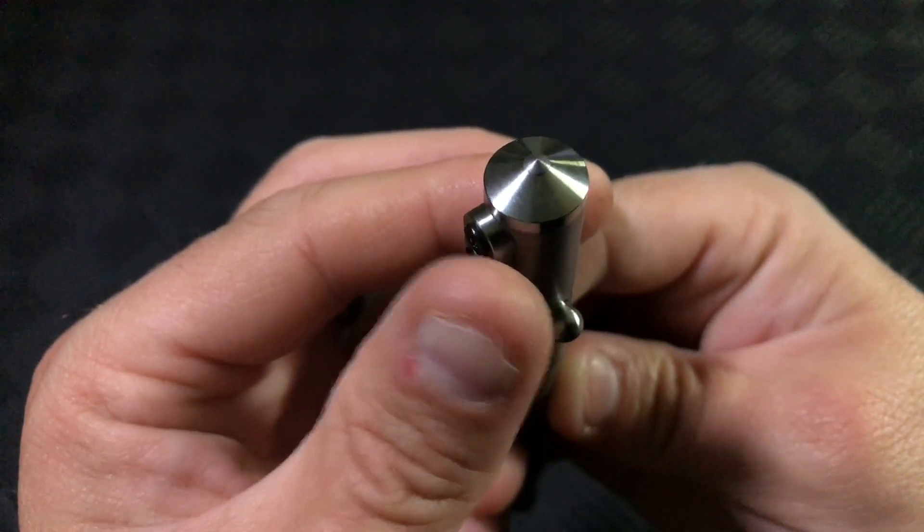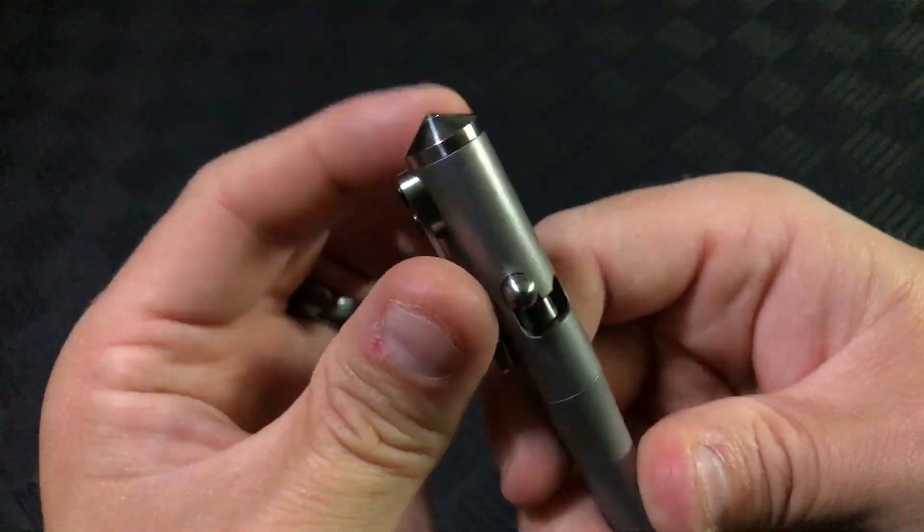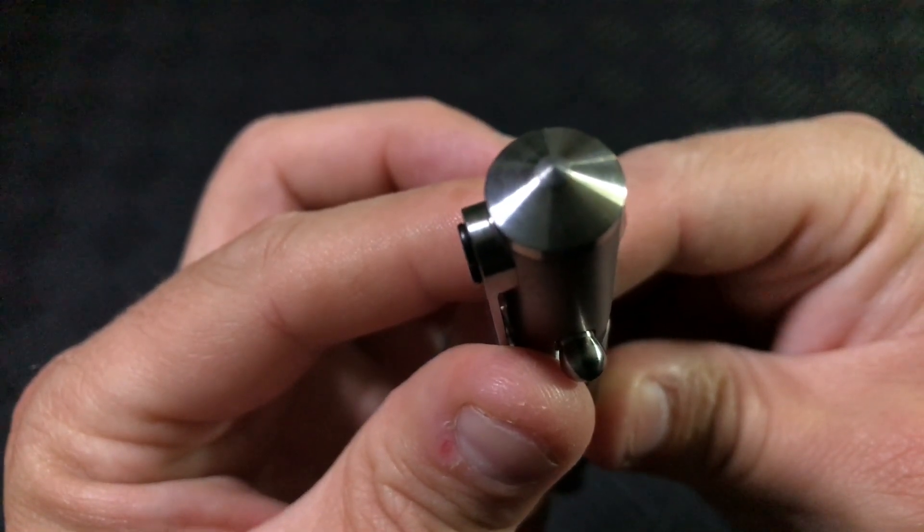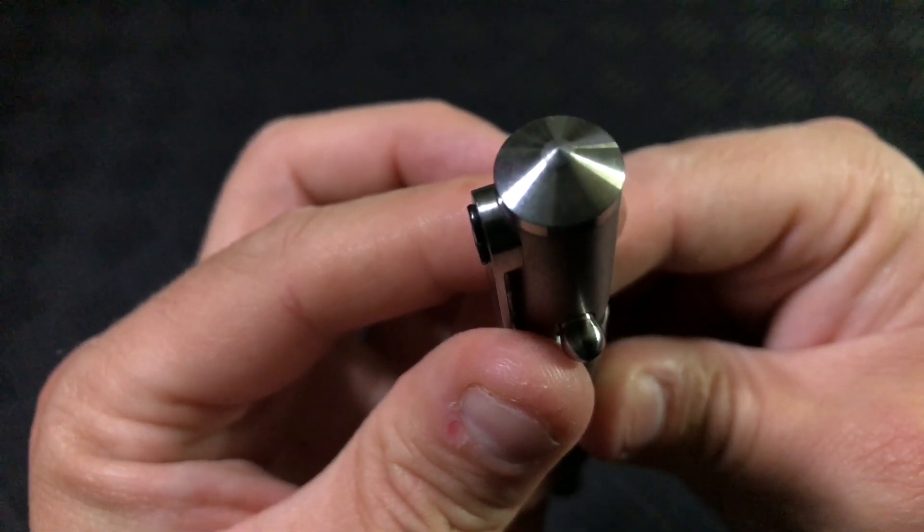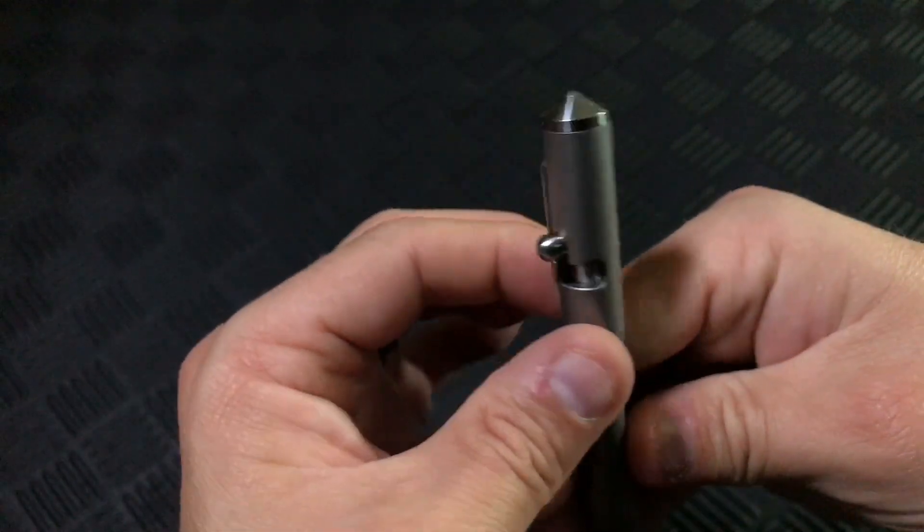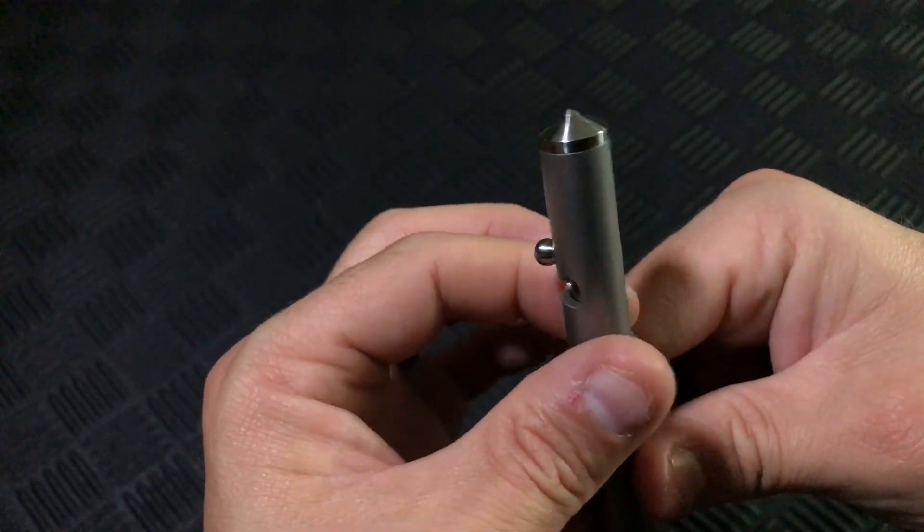Next, you may have noticed that the top of the pen comes to a point, and that darker gray area at the tip is actually tungsten, one of the hardest and strongest metals in the world. This makes it a great option for breaking glass, which is what the design is geared for.